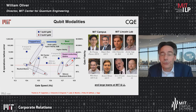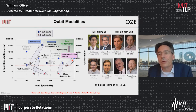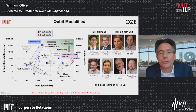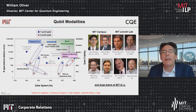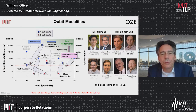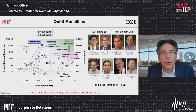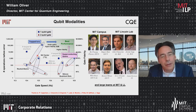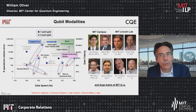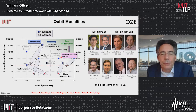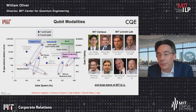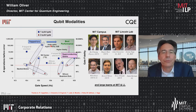Speed still matters. If a quantum algorithm is exponentially faster than a classical algorithm, that's fantastic. But there's still a difference between slow and fast: if it takes a day on a superconducting qubit quantum computer running at maybe 100 megahertz — a thousand times faster than a trapped ion quantum computer — that same task would take a thousand days on a trapped ion quantum computer, all else being equal. So gate speed matters, which is why trapped ions are trying to increase their logic speed.